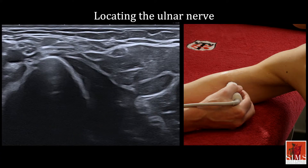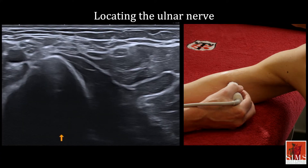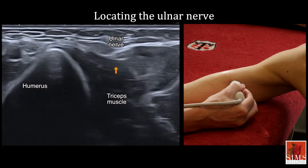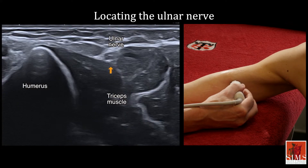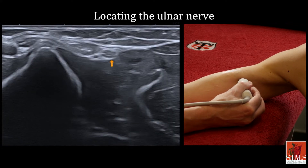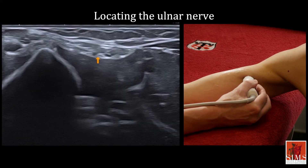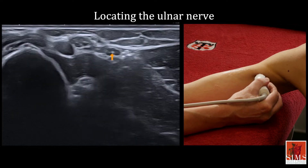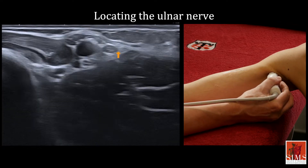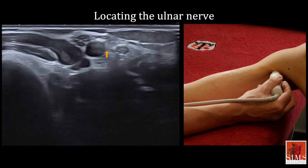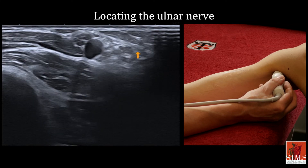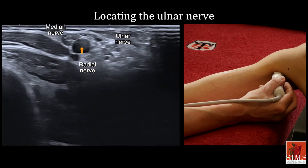The easiest way to locate the proximal portion of the ulnar nerve is to approach it medially at the level of the middle third of the arm, where it is observed superficially. Then, using the elevator technique, tracing it to the axilla where it is found medial to the other main trunks of the arm.